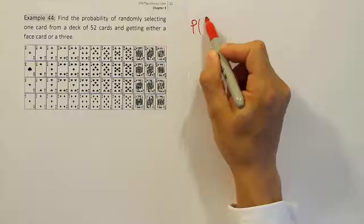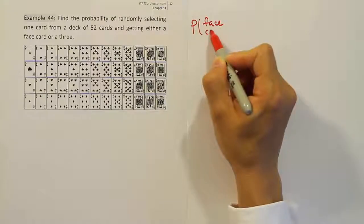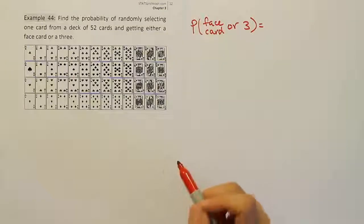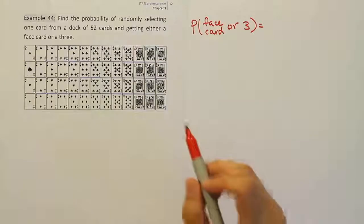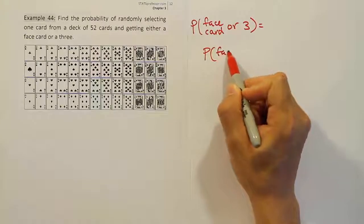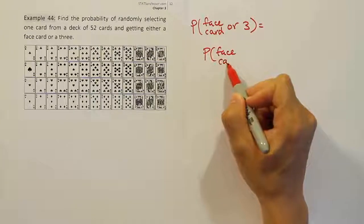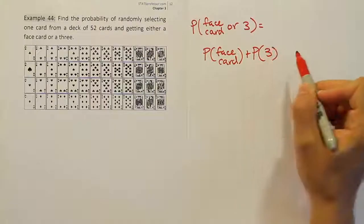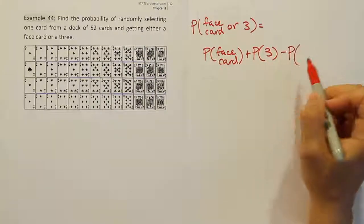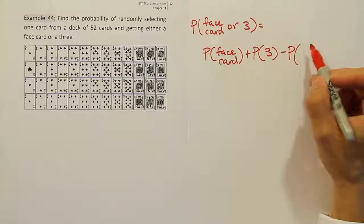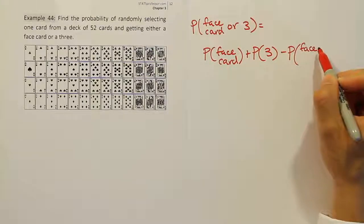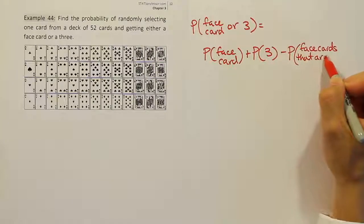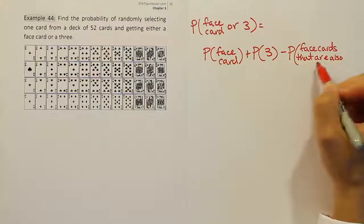It would be the probability of a face card or a 3. That can be broken down into three fractions: the first representing the probability of getting a face card, plus the probability of getting a 3, minus the probability of getting both of these things together on the same card — that means face cards that are also threes.